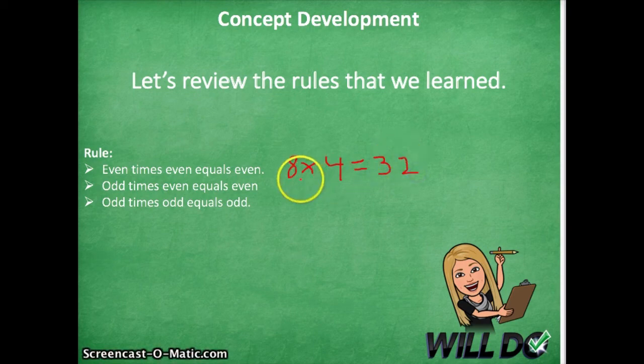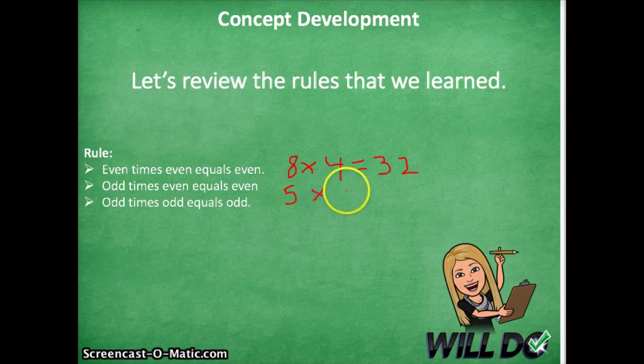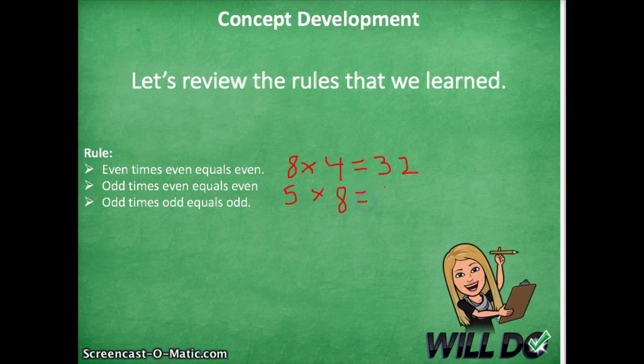An odd number like five times eight, an even number, equals an even product, forty.